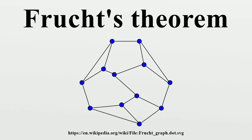More strongly, for any finite group G there exist infinitely many non-isomorphic simple connected graphs such that the automorphism group of each of them is isomorphic to G.